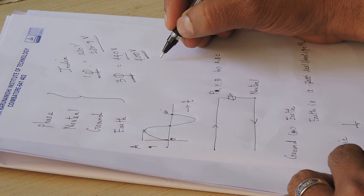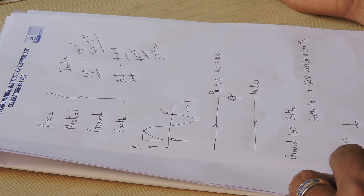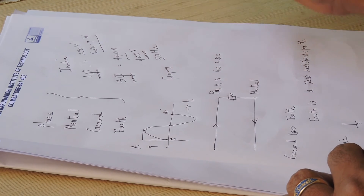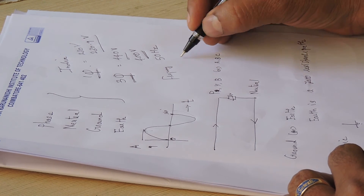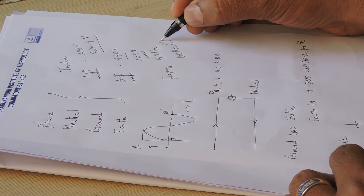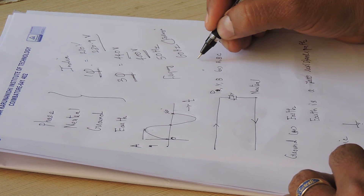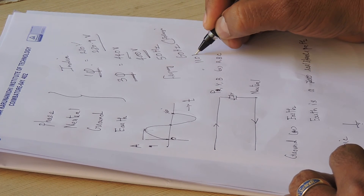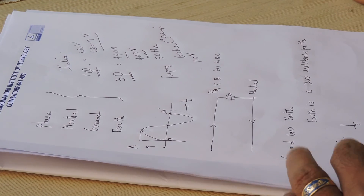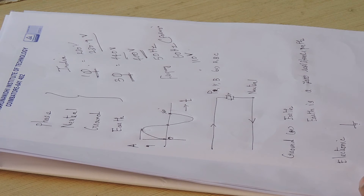Our Indian standard frequency is 50 hertz. There is another frequency system of 60 hertz, but it is not practiced in India — it is used in some foreign countries where the system voltage is 110 volts. That is all I want to talk to you about the basics.